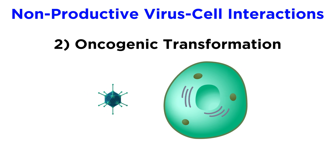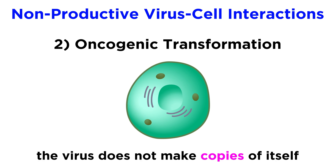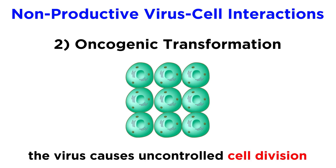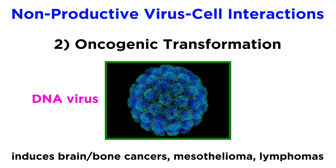The second outcome, which is more rare, is oncogenic transformation. This means that the virus isn't able to make copies of itself, but it affects the cell in such a way that it triggers uncontrolled cell division, which we typically call cancer. An example of this is polyomavirus simian virus 40, or SV40, in rodent cells. This DNA virus induces primary brain and bone cancers, malignant mesothelioma, and lymphomas in laboratory animals.